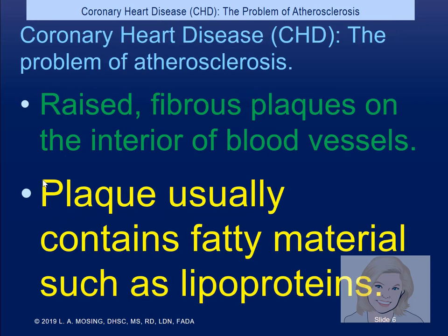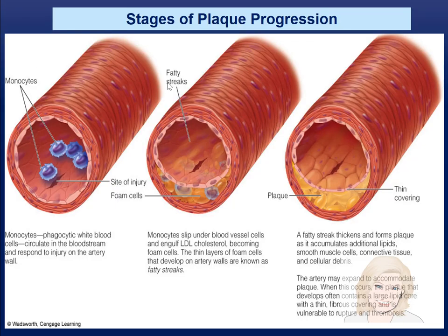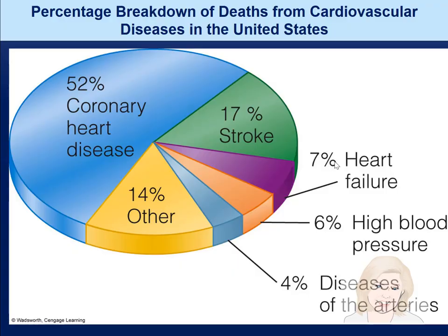The plaque is raised fibrous plaque, and a lot of people think you can roto-rooter your body — put a stent in and that solves the problem. It doesn't. The plaque usually contains fatty material like lipoprotein, and the fatty streaks begin to accumulate. When we're looking at the breakdown of deaths, coronary heart disease is our biggest problem. If you have a stroke, it's usually related to high blood pressure.